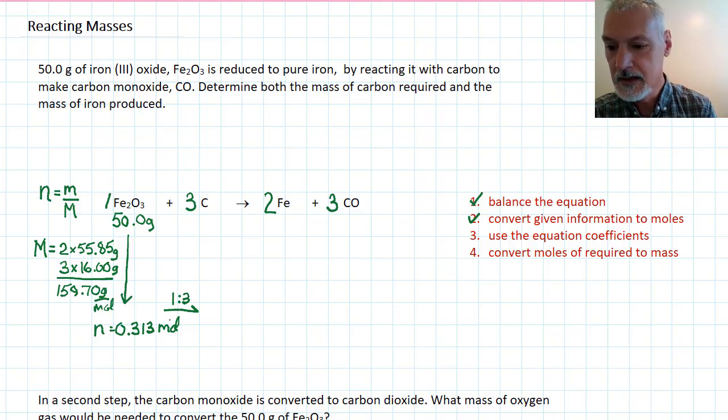Because I need three times as many. So, I'm going to multiply this by three, and this tells me now the moles of carbon that I'm going to require three times as much. So, that's step three, use the equation coefficients.